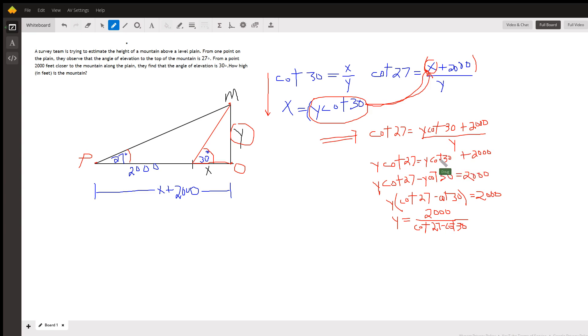Move terms that have a y in it to the same side of the equal sign. I've subtracted y cotangent of 30 from both sides, then factor out that y. So y times the quantity cotangent 27 minus cotangent 30 equals 2000.